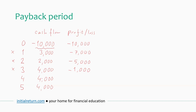At the end of year four, we would have got another $4,000, so now we are running a profit. And that profit will increase by another $4,000 in year five, which will become $7,000 in total. This tells us that our payback period is somewhere between three and four years — this is the moment we move from a loss to a profit.